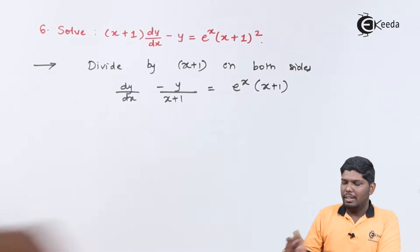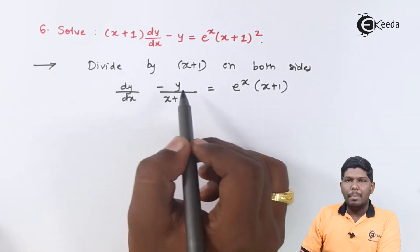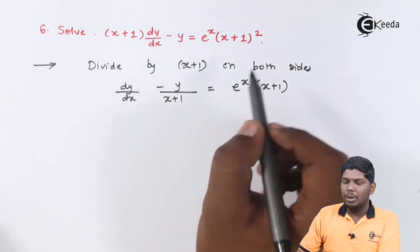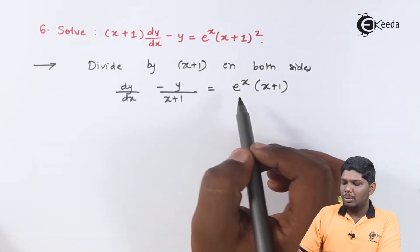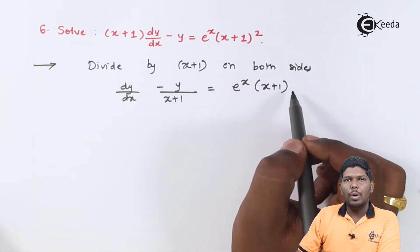So on dividing by (x+1), we will get dy/dx - y/(x+1), and on the right hand side (x+1) will be cancelled. So this will give you e^x(x+1).